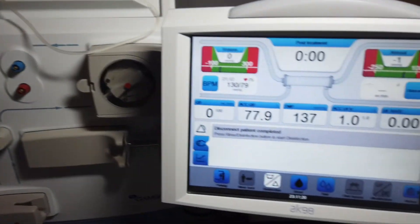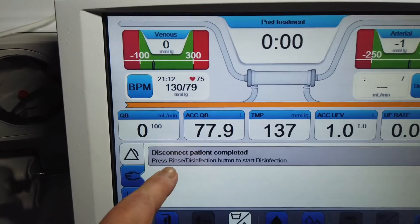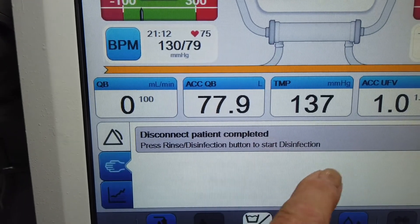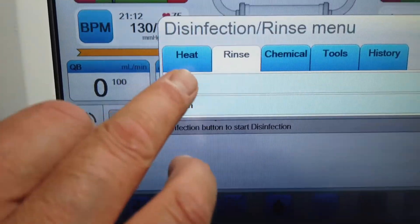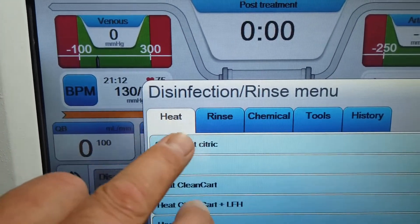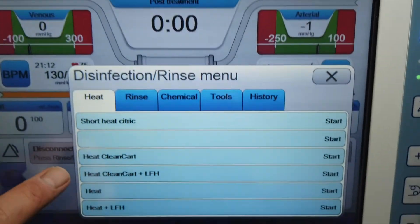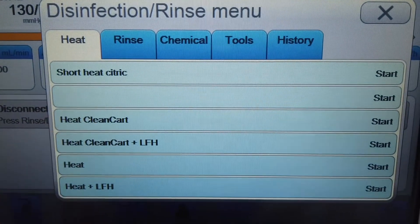Once the hatch is closed, now we can go ahead. If you look at the screen, it says press rinse disinfectant button and start disinfection. So I press the disinfection. I push heat and then I got the manual here. If you press this, which is the heat, clean cart, which is a C.